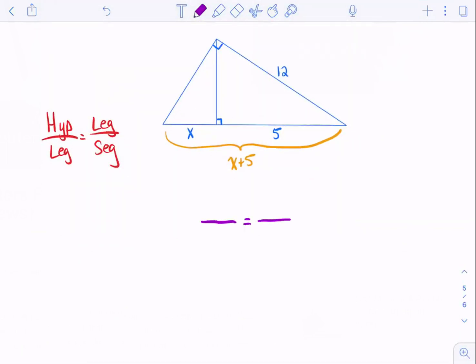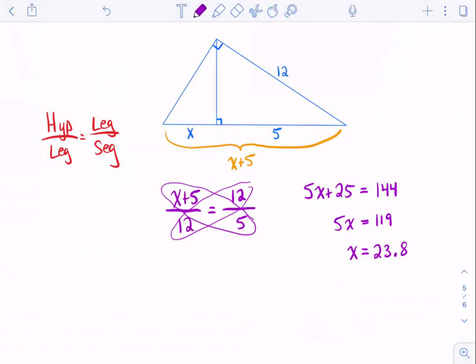Keep that in mind because now I could set up my proportion. My leg is 12, so I'm going to write 12 twice. My hypotenuse is x plus 5. And since I'm using this leg, I use this segment, which is 5. So now when I cross multiply, you have to be careful. You have to distribute the 5 to both the x and the 5. So it becomes 5x plus 25 equals 144. When I subtract 25, I get 5x equals 119. And then when I divide by 5, I get x equals 23.8. It's doable. You can figure it out.